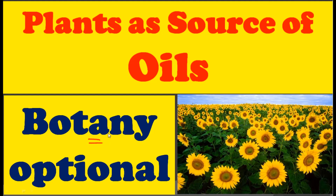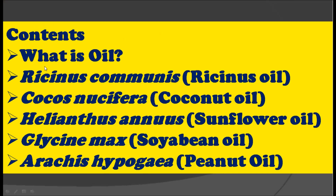Hello everyone. Welcome to Botany Option channel for the UPC examination. In today's video we are going to see plants as sources of oils. This has been given in your paper number one, chapter number four. First we will see what is meant by oil, then oil obtained from five plants: Ricinus communis, Cocos nucifera, Helianthus annuus, Glycine max, and Arachis hypogaea. We will see these plants one by one.